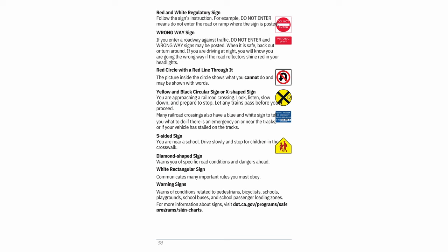Red circle with a red line through it — the picture inside shows what you cannot do. Yellow and black circular sign or X-shaped sign — you are approaching a railroad crossing; look, listen, slow down, and prepare to stop; let any trains pass before you proceed. Many railroad crossings also have a blue and white sign to tell you what to do in an emergency or if your vehicle has stalled on the tracks. Five-sided sign — you are near a school; drive slowly and stop for children in the crosswalk. Diamond-shaped sign — warns of specific road conditions and dangers ahead. White rectangular sign — communicates important rules you must obey. Warning signs — warn of conditions related to pedestrians, bicyclists, schools, playgrounds, school buses, and school passenger loading zones.